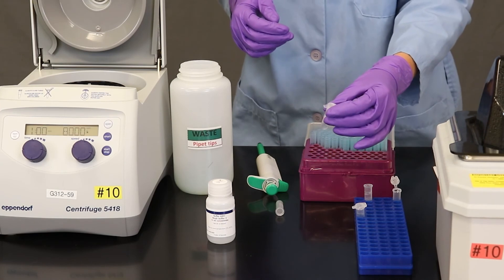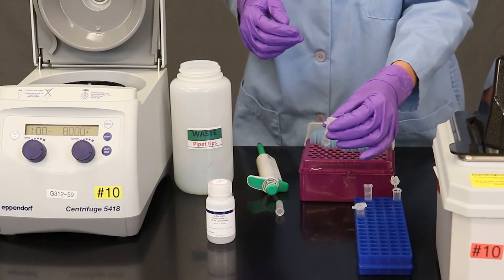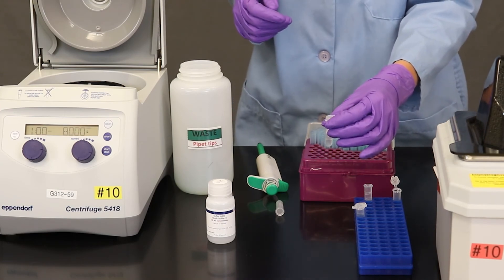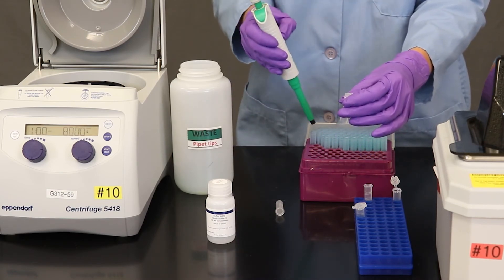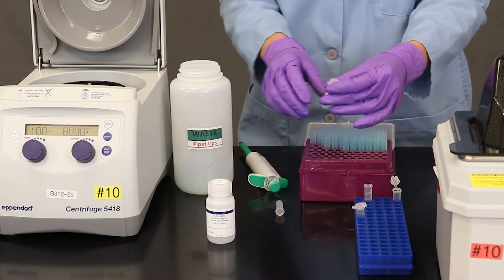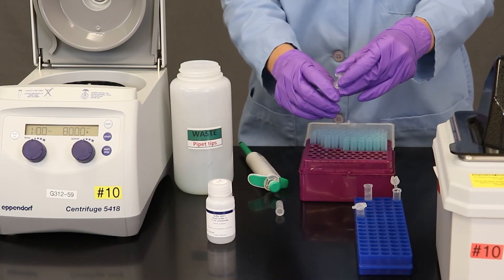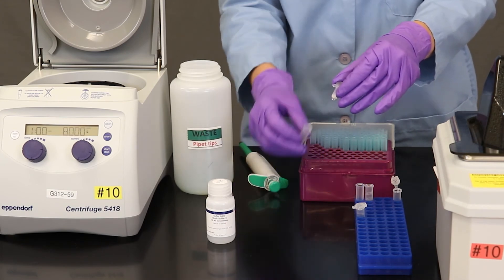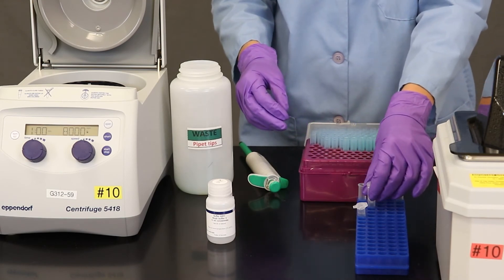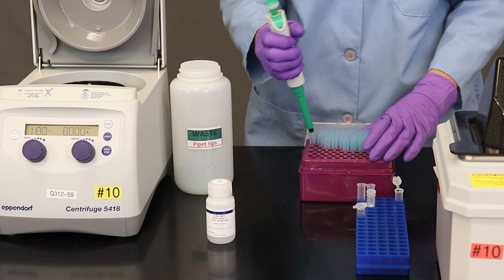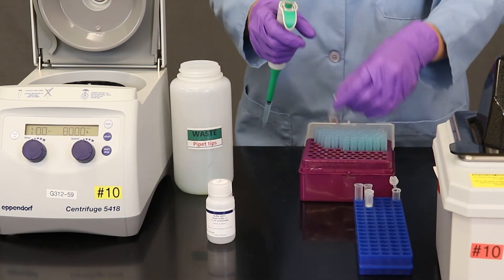So I've removed this tube from the centrifuge following the first wash step. And now I'm going to go ahead and add the second round of wash buffer. So let me go ahead and take off this bottom part of the column first and put on a fresh tube. And then we're going to add this second wash buffer again, 500 microliters of it.